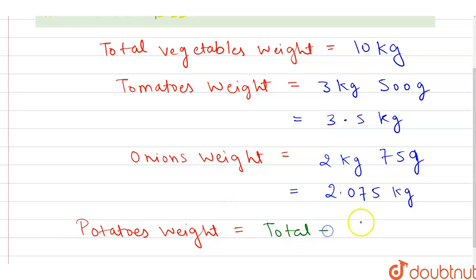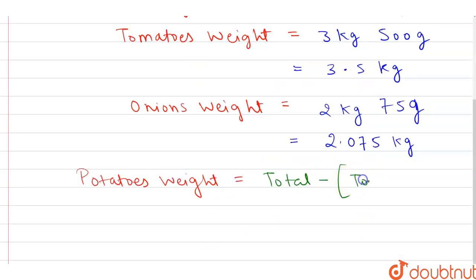total minus 2.075 kg tomatoes weight plus onion weight.